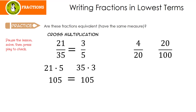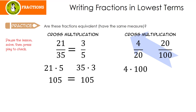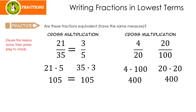Let's look at the second one. We're going to cross multiply. 4 times 100 is 400, and 20 times 20 is also 400. Since 400 equals 400, that means that 4 over 20 is equivalent to 20 over 100.